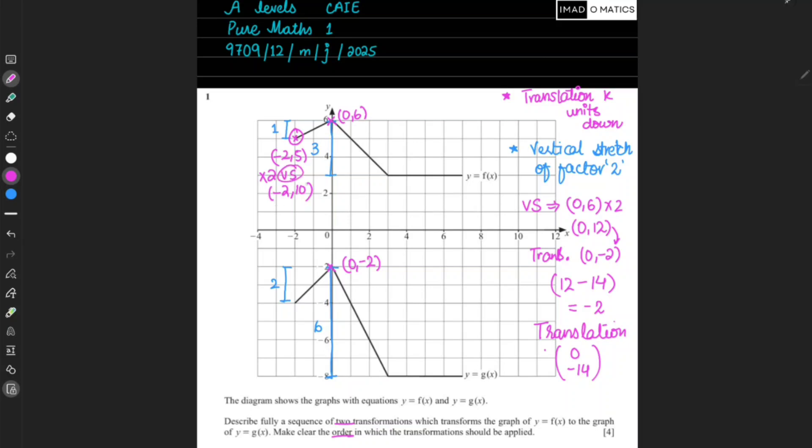What is added to ten to get your coordinates to be minus two comma minus four? To get minus four, obviously in ten what we will be adding or subtracting? Ten minus fourteen will give you minus four. So that means for this one also, it is clear that the translation is of zero comma minus fourteen.